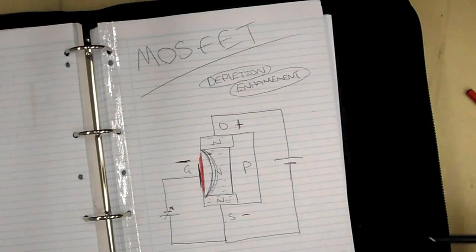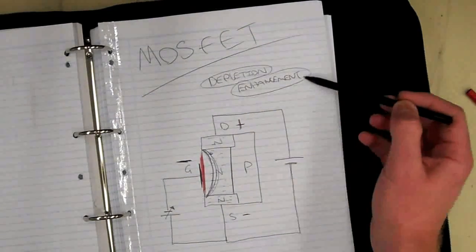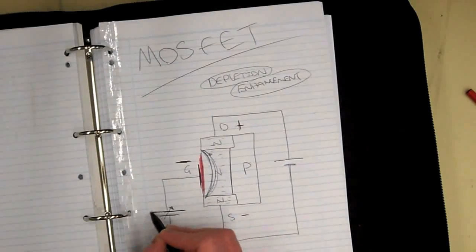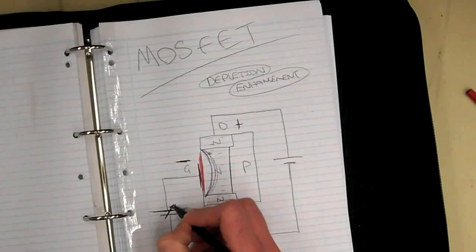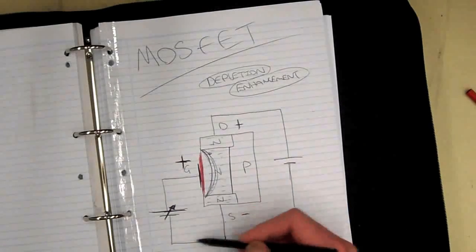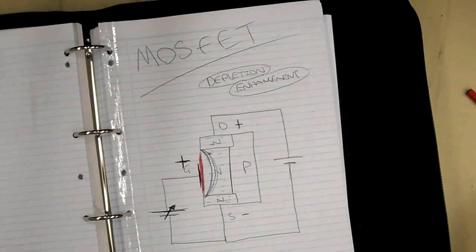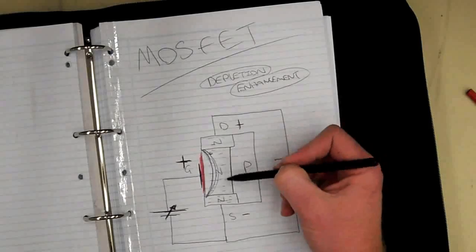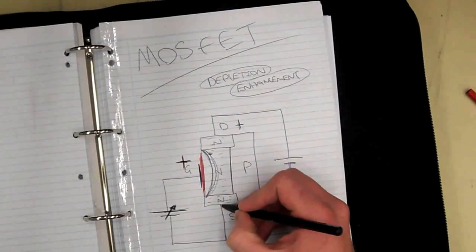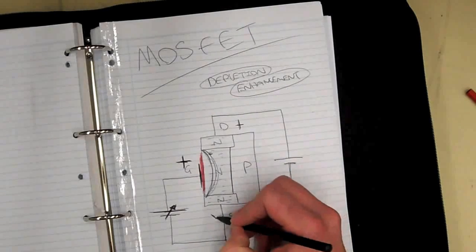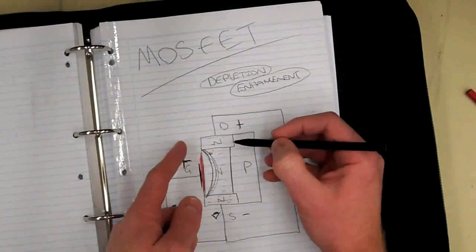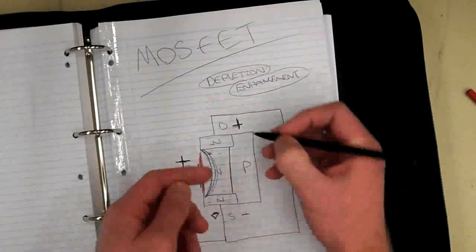That's it for operating in depletion mode. To operate in enhancement mode, all we need to do is reverse the power supply. We make the gate more positive with respect to the source. Think about our magnets again — we've got all these electrons in the channel which are negative, and we've just put a positive on the gate, so opposites attract. Picture all the electrons down at the source looking up into the channel — they're seeing this positive potential on the gate.